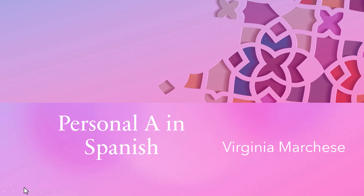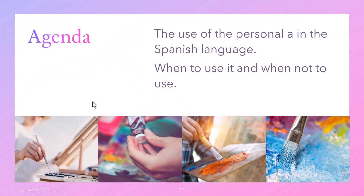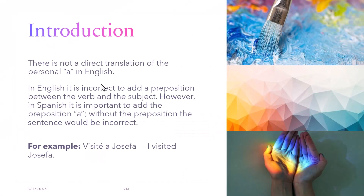The agenda for today is the use of the Personal A in the Spanish language — when to use it and when not to use it. There is no direct translation of the Personal A in English. In English, it is incorrect to add a preposition between the verb and the subject. However, in Spanish, it is important to add the preposition A. Without the preposition, the sentence will be incorrect. For example, in Spanish we say 'Visité a Josefa,' while in English we simply say 'I visited Josefa.'